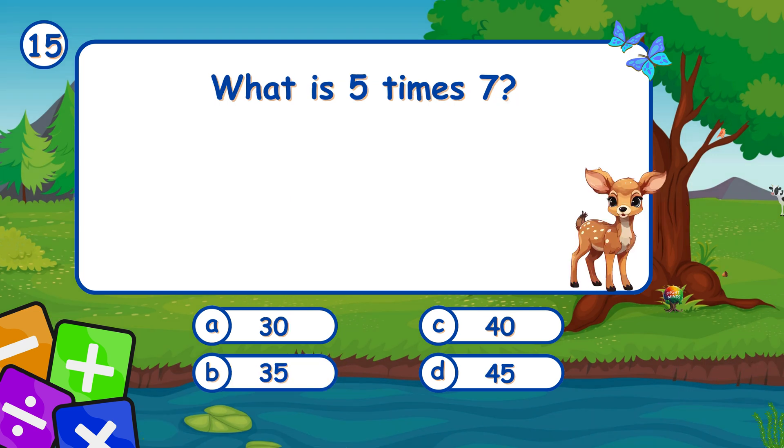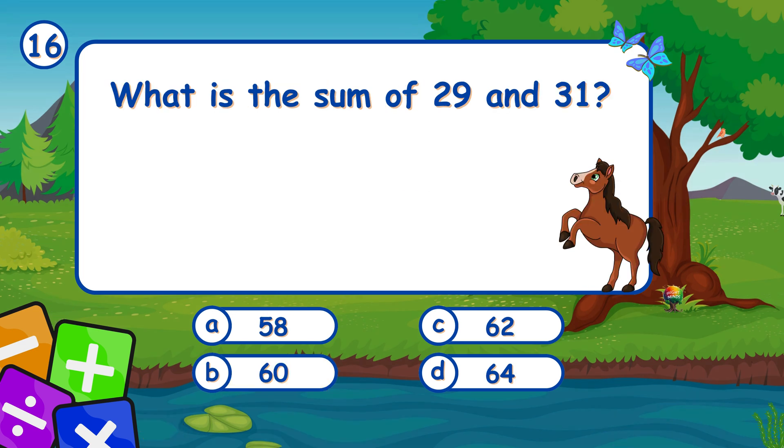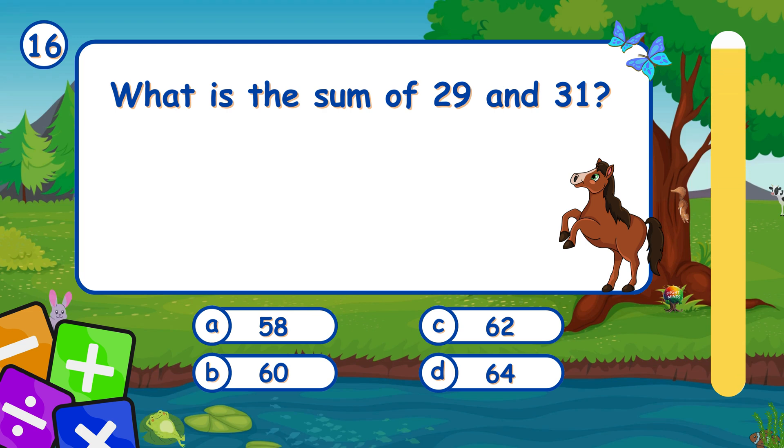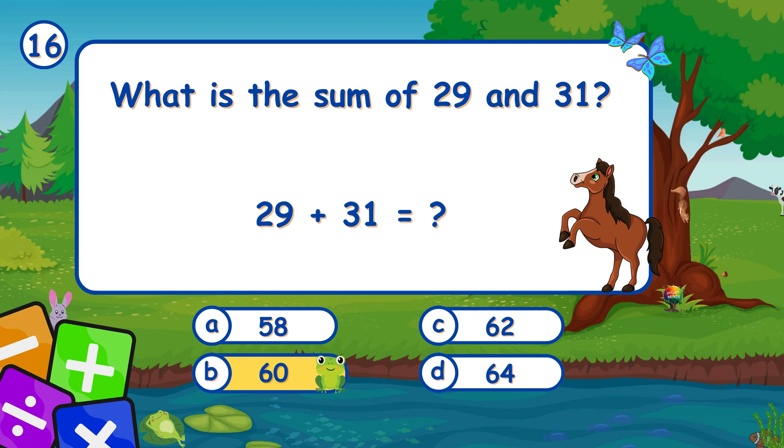What is 5 times 7? It's B, 35. 5 times 7 is 35. What is the sum of 29 and 31? It's B, 60. Adding 29 and 31 gives 60.